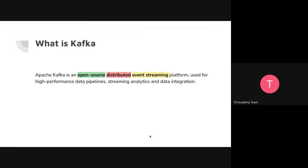So, the definition: Kafka is an open-source distributed event streaming platform. The important thing here is 'event streaming.' The whole point is that it is for data streaming. 'Event' here just means sending data, and we use it for high-performance streaming analytics and data integrations. Streaming means continuous, real-time data flow — not something stored and retrieved at specific times or in batches.